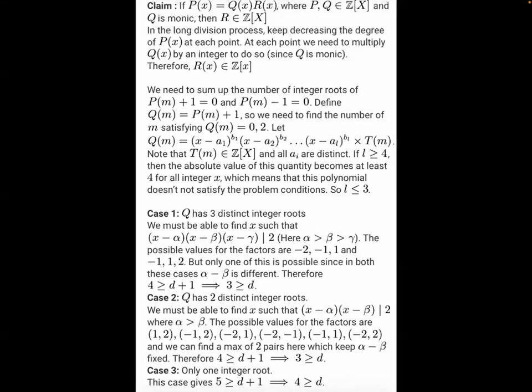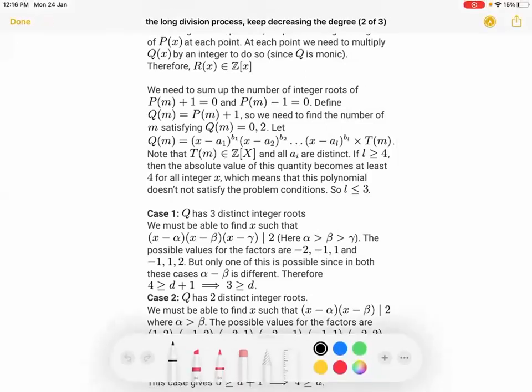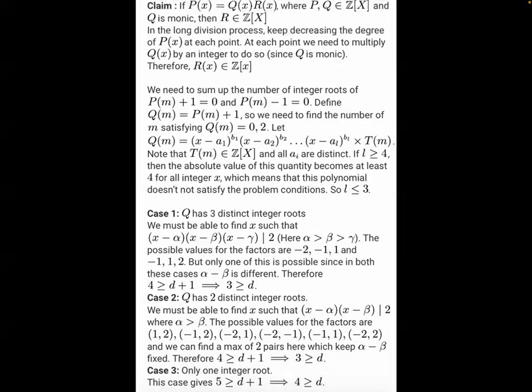We start with a claim: if P(X) = Q(X)·R(X) where P and Q are polynomials with integer coefficients, and Q is monic, then it follows that R is also a polynomial with integer coefficients.